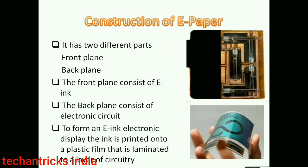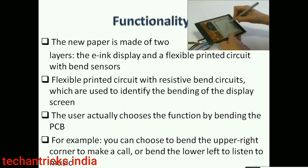Construction of e-paper: it has two parts — front plane and back plane. The front plane consists of e-ink, and the back plane consists of electronic circuitry. To form an e-ink electronic display, e-ink is printed onto a plastic film that is laminated by a layer of circuitry.